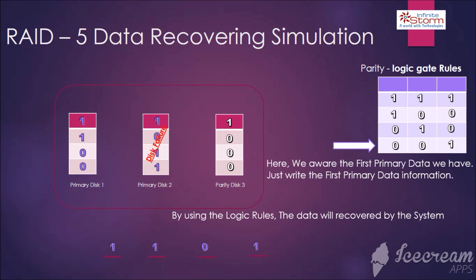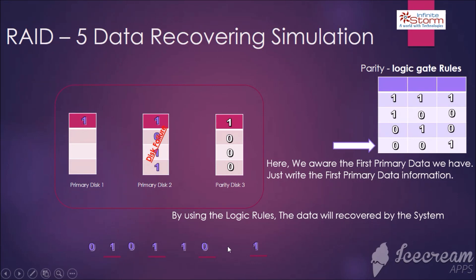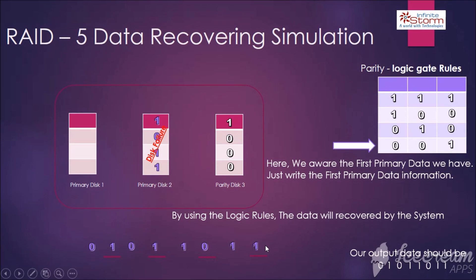Now we have the 4 bits of data recovered using the logic algorithm. The final step is to write both disk data alternatively to get the output. After rechecking the bits — 0, 1, 0, 1, 1, 1, 0, 1, 1 — this is the data we lost, and we have now recovered it.